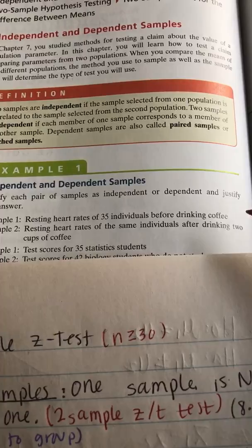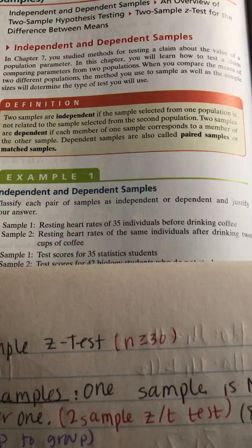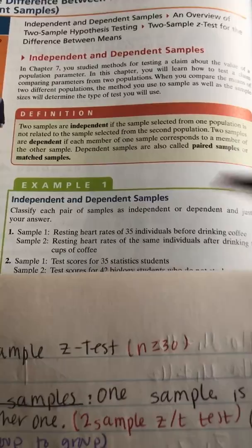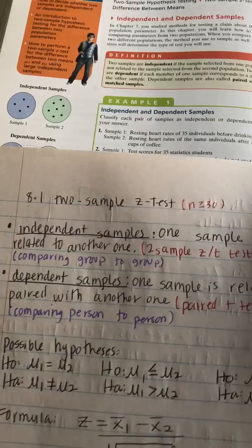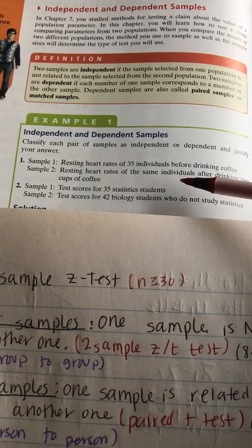Let's look at a few examples from your book. Say you want to compare the resting heart rate of three people before they drink coffee and then the heart rate of the same people after they drink coffee. The key here is that it's the same individuals — you're comparing their heart rate to their own heart rate. So that would be a dependent sample.